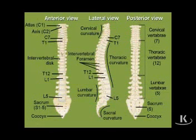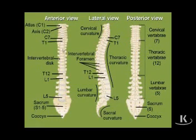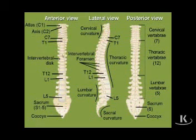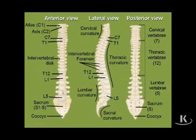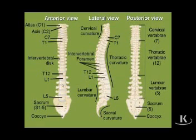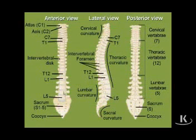From the anterior view, we can see primarily the vertebral bodies and the intervertebral discs between them. The major function of that part of the vertebral column is to support weight — the vertebral bodies and discs are designed for weight-bearing. As a result, the size of these vertebral bodies and discs gets progressively larger as we descend along the column, since the further down you go, the more superimposed weight must be supported.